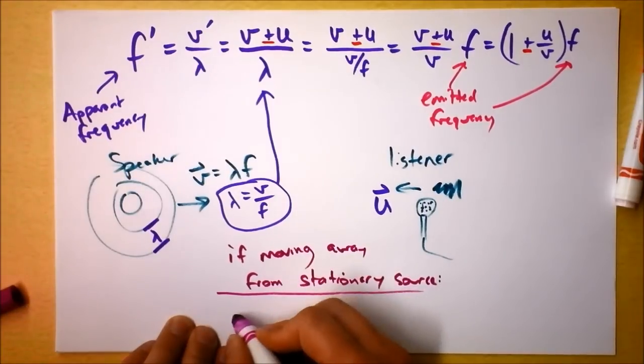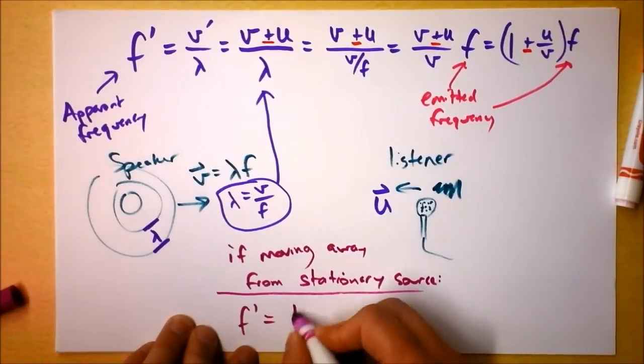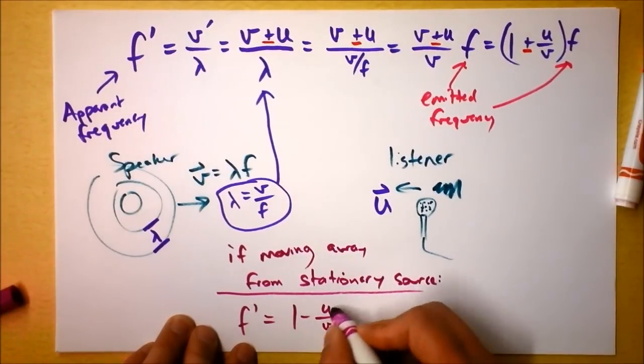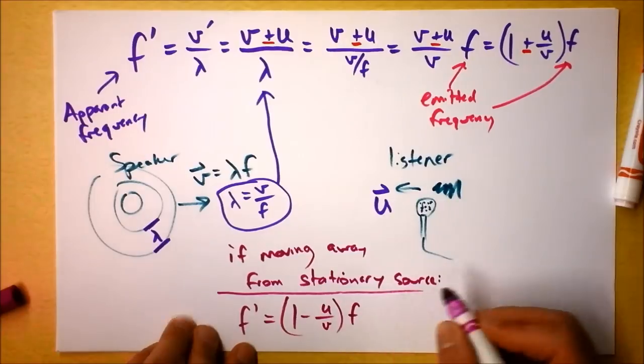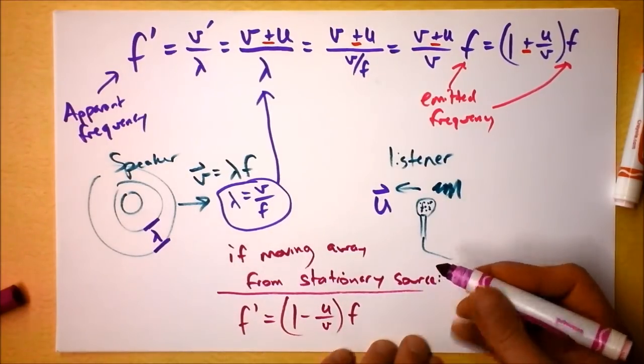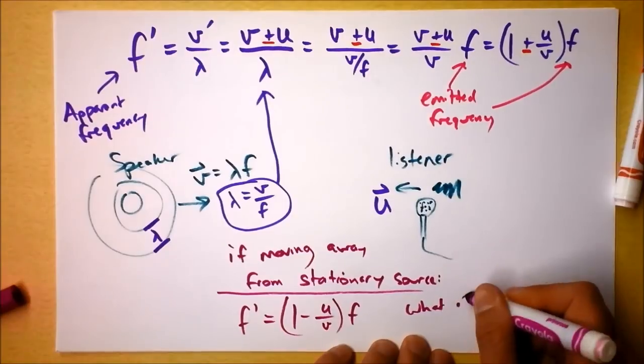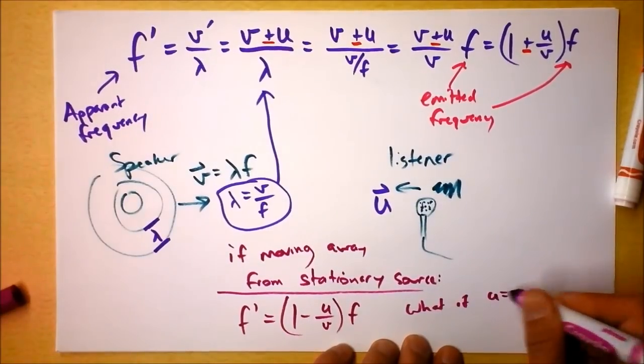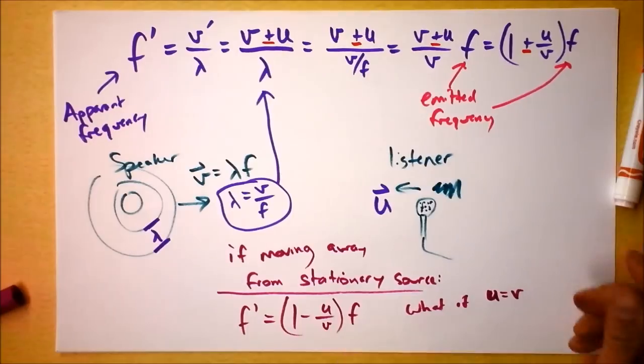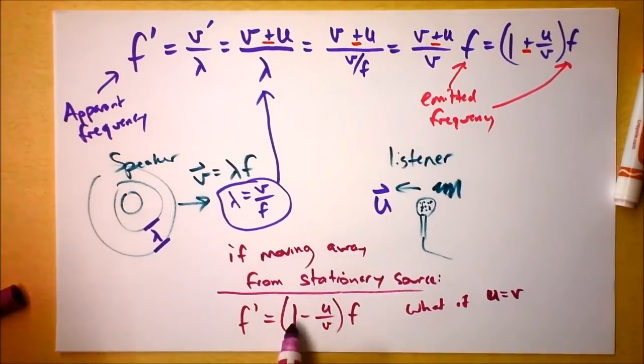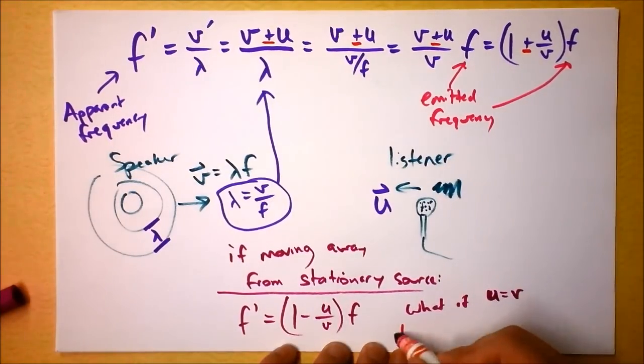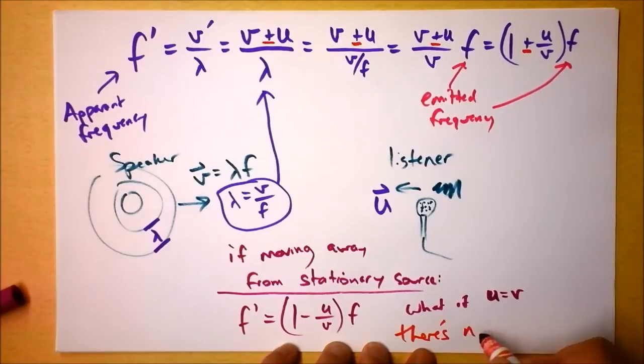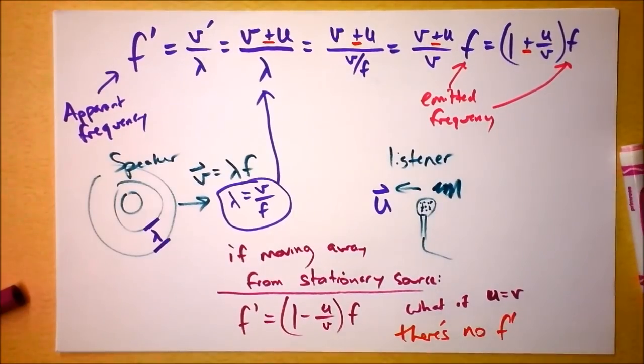If moving away from a stationary source, then I've got frequency prime is one minus U over V times the frequency that's actually being emitted. So what if U equals V? What if we're actually moving at the wave speed? What's the apparent frequency? Try this out. We've got one minus U over V, but U is V. So we've got one minus one times the frequency. There's no F prime, there's just no frequency, which means nothing's changing.